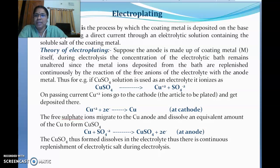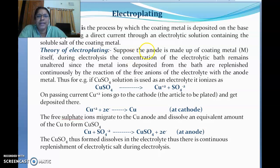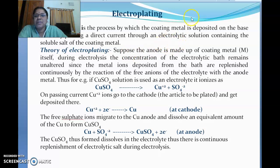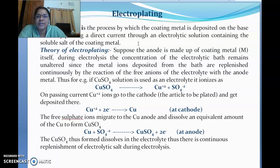Electroplating is a part of corrosion prevention or corrosion control. This plating can be done by passing electricity, hence it is called electroplating. Simply, this can be defined as the process by which a coating metal is deposited on the base metal by passing direct current and using an electrolytic solution, which may contain a soluble salt of the coating metal. This is done using a DC power supply.